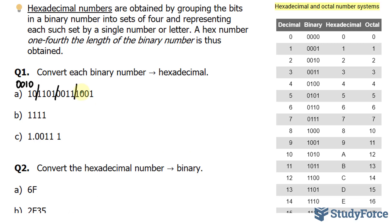The first group, 1001, can be found in this chart. 1001 is 9, so this number is a 9.